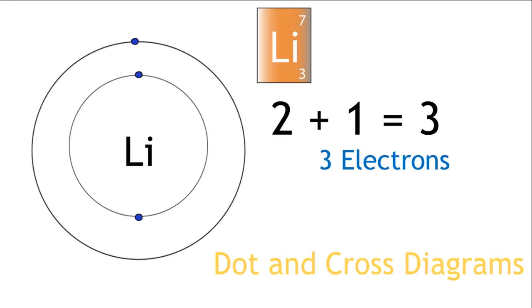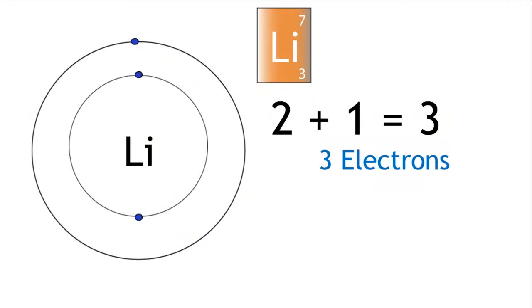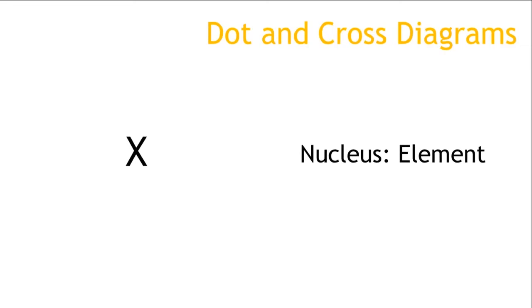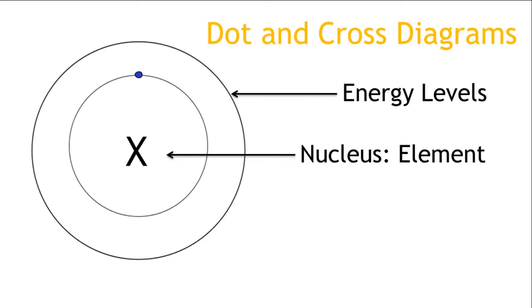These diagrams are called dot and cross diagrams, and they are used to show the electronic configuration of an element. You need to be able to draw these diagrams, as well as being able to write the electronic configuration in a written form. For lithium, this will be written as Li 2,1. In the diagram, the nucleus is represented by the element symbol, or a central black dot. The energy levels are represented by circles around the nucleus, and the electrons are represented by dots or crosses.